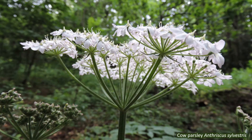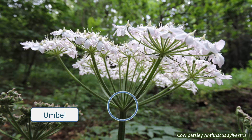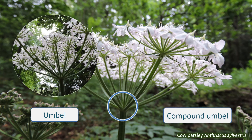The distinctive flower heads, or inflorescences, of the Apiaceae are called umbels, hence their alternative name of Umbelliferae. These umbels are relatively flat-topped clusters of flowers that radiate out from a central point to form an umbrella-like shape. The inflorescences are often compound umbels — an umbel shape made up of many smaller umbels. The umbels may have bracts or bracteoles beneath them, which protected the flowers in bud.